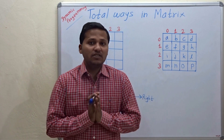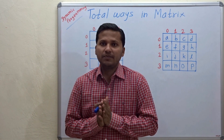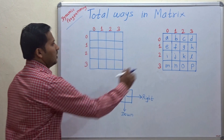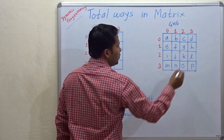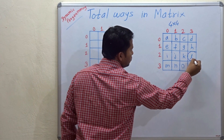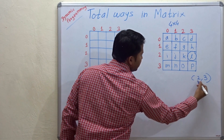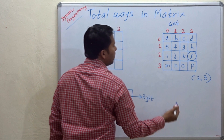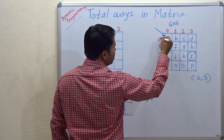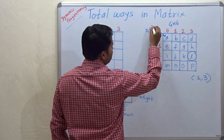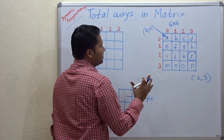Hello friends, today we are going to see how to find out the total number of ways to reach a cell in a matrix. This is a 4x4 matrix and suppose you want to reach cell 2,3 — meaning second row and third column. You want to reach this cell starting from cell 0,0. How many number of ways are there to reach this cell? That is the problem statement.